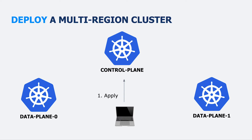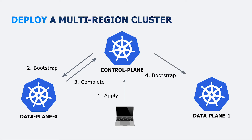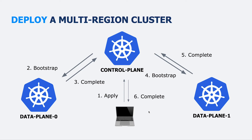The control plane begins bootstrapping the K8ssandra cluster, starting with the data center in data plane zero. It creates the object inside the data plane zero Kubernetes API, the local operator starts bootstrapping actual pods and persistent volumes, and reports status back up to the control plane. When complete, the control plane bootstraps the second data center in data plane one, monitors the status, and waits for completion. You never need to switch context to talk to the data plane clusters — you just communicate with the control plane. The end result is a multi-region, multi-data-center, multi-Kubernetes-cluster Apache Cassandra cluster that is highly available and fault tolerant at the regional level.